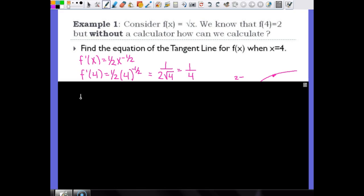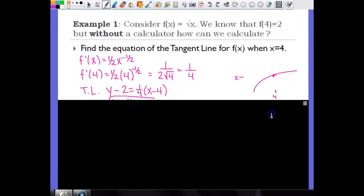I have the slope at 4, and the y value at 4, and the x value. So we're going to rewrite this a little bit differently this time than normal. The tangent line is y - 2 = 1/4(x - 4).